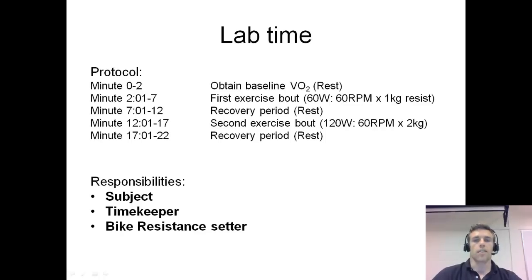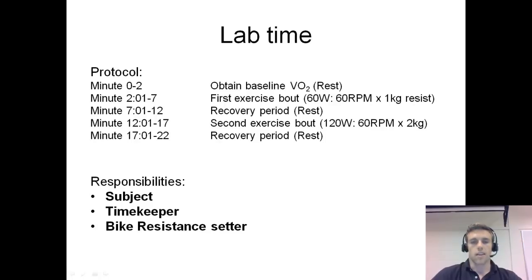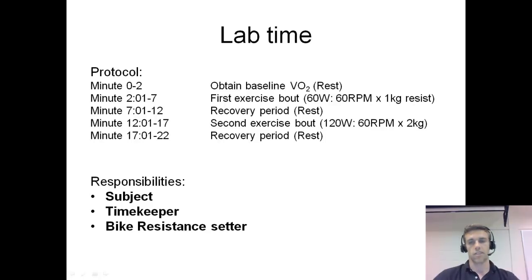We can do this by first obtaining some resting values. The subject will sit on the bike for two minutes and they won't do anything. And then for five minutes, they're going to exercise at 60 watts. This is going to be a light bout of exercise, and they're going to reach their steady state fairly quickly, so they're going to have an oxygen deficit for a short amount of time and then reach steady state.